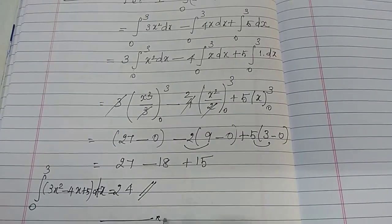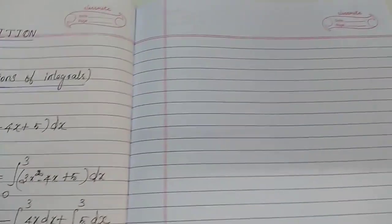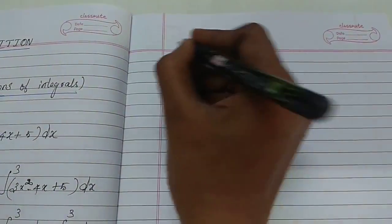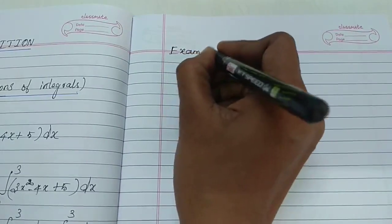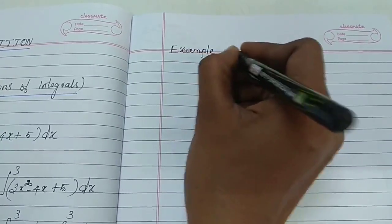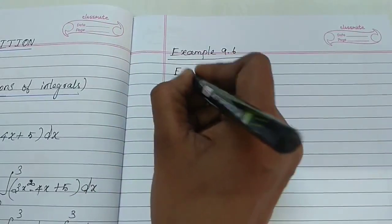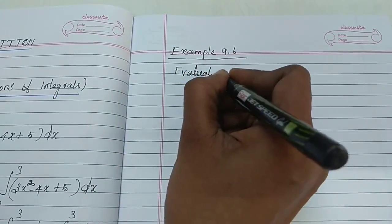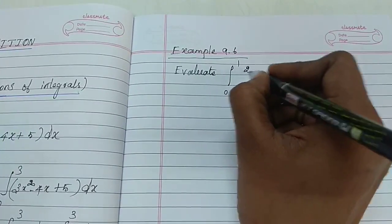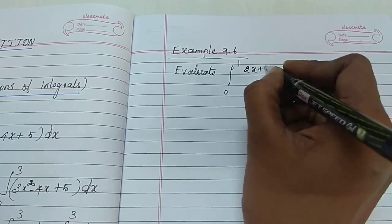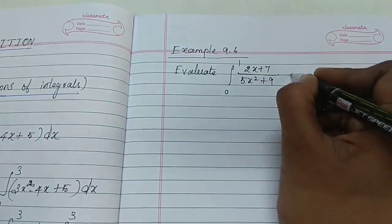Example 9.5 is now complete. We now move to Example 9.6. The question is: evaluate integral from 0 to 1 of (2x plus 7) divided by (5x squared plus 9) dx.